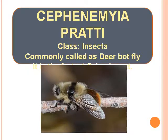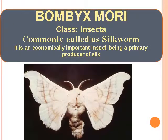Cephenemyia Pratti — Class Insecta, commonly called as Deer Bot Fly; it is the fastest flying insect. Bombyx mori — Class Insecta, commonly called as Silkworm. It is an economically important insect being a primary producer of silk.